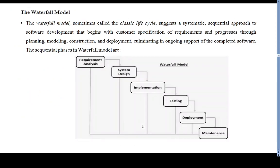The first type is the waterfall model. The waterfall model, sometimes called the classic life cycle, suggests a systematic sequential approach to developing software. It begins with requirement analysis and ends with maintenance and deployment. The waterfall model is also called a linear sequential model or classical life cycle model.